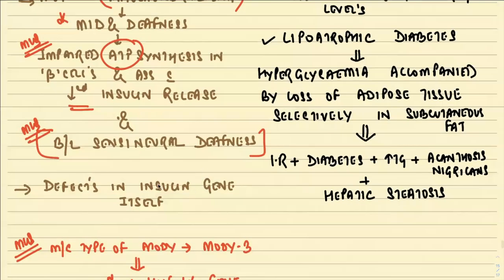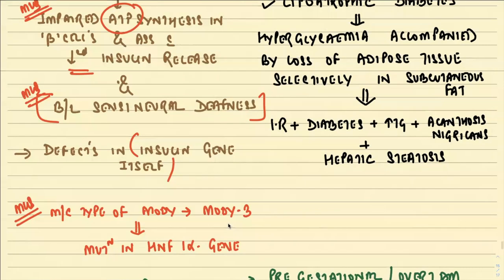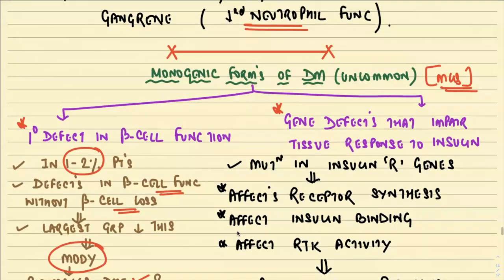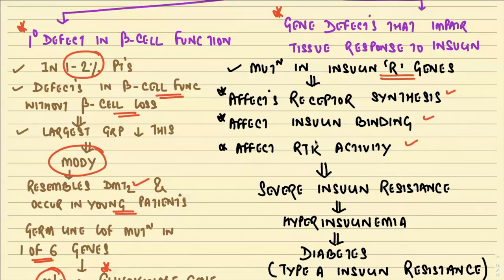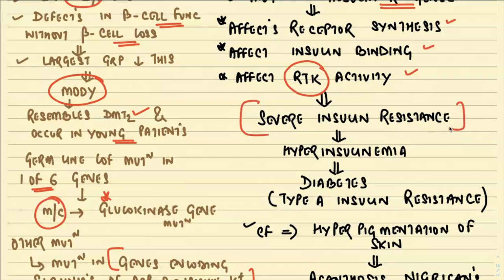Some mutations may involve defects in the insulin gene itself. Regarding the second group — gene defects that impair tissue response to insulin — there is a mutation in the insulin receptor gene, affecting receptor synthesis, insulin binding, or receptor tyrosine kinase activity. This leads to severe insulin resistance with hyperinsulinemia and diabetes, classically called Type A insulin resistance.